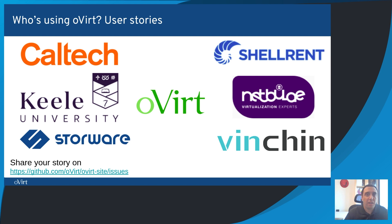On the oVirt website, you can find a few featured stories from past years under the community section. Something I like to repeat at these conferences is that the first oVirt user is the oVirt project itself. In the oVirt project data center, we are running it on nine data centers, 15 storage domains, 11 hosts, and 134 VMs. If you want to share your story, feel free to open an issue on the oVirt site GitHub and we'll help you publish it.